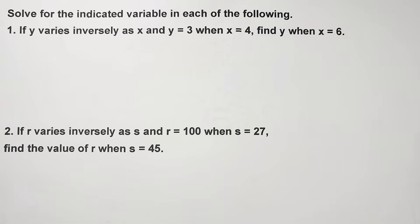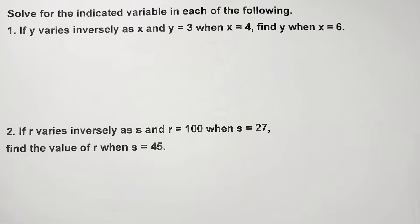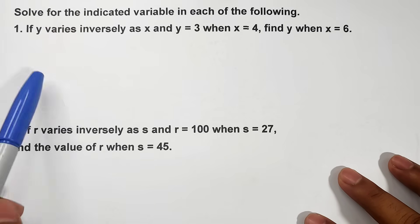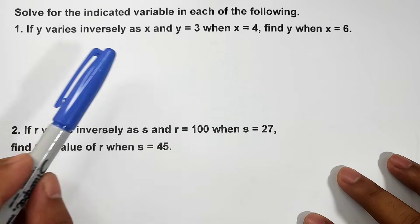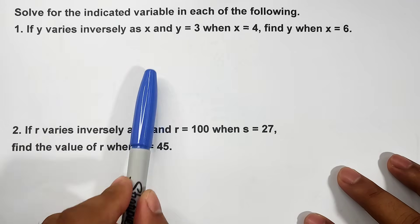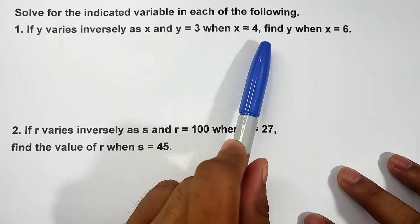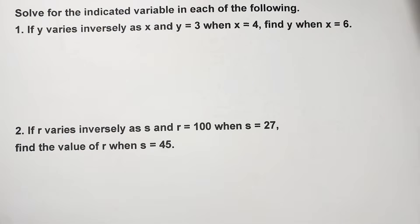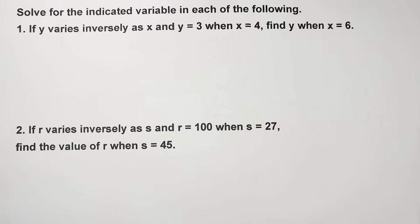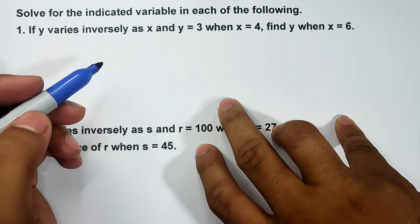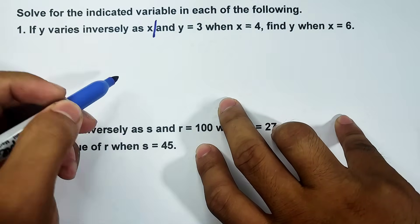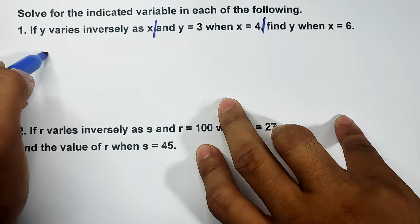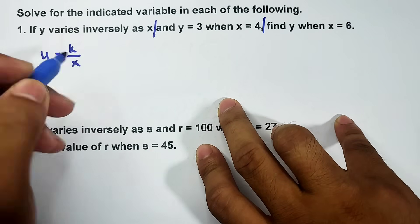We will solve directly for the missing variable in a given inverse variation. Solve for the indicated variable in each of the following. In number 1, we are asked if y varies inversely as x and y equals 3 when x equals 4, find y when x equals 6. When students see this, they are confused because it's complex. What you do is you need to chop it up. This part is for the main equation. Y varies inversely as x, that is y equals k over x.